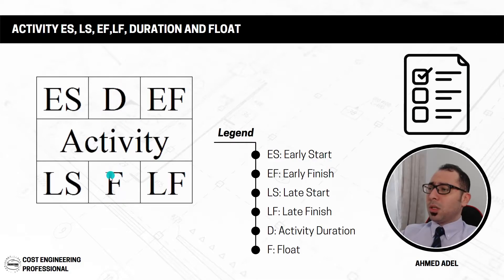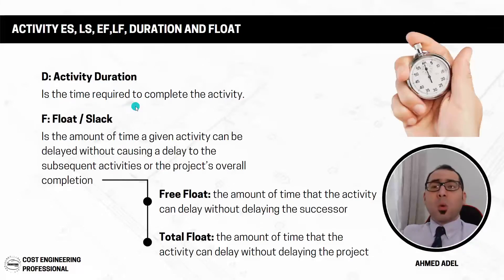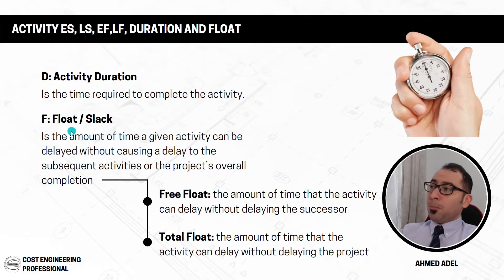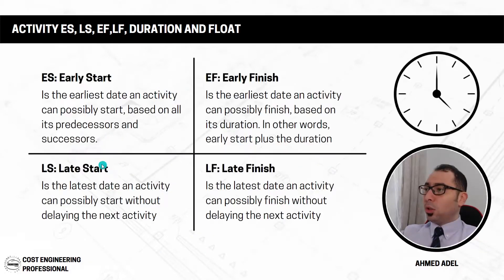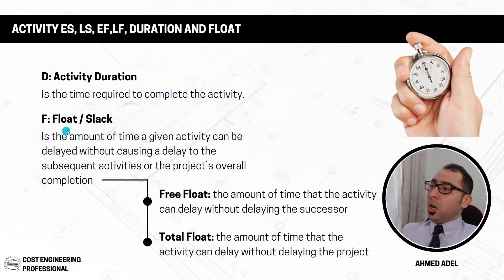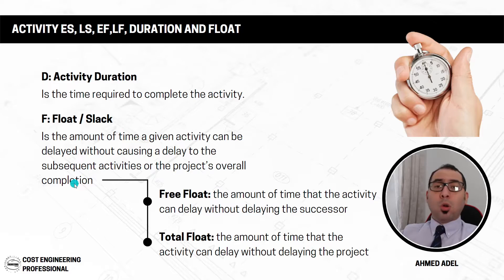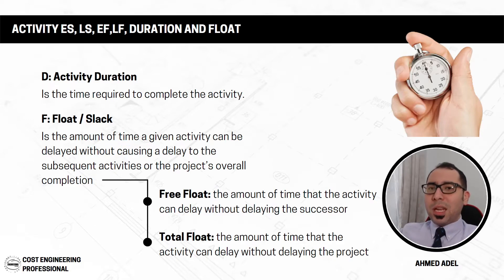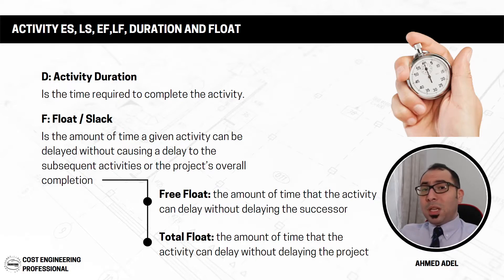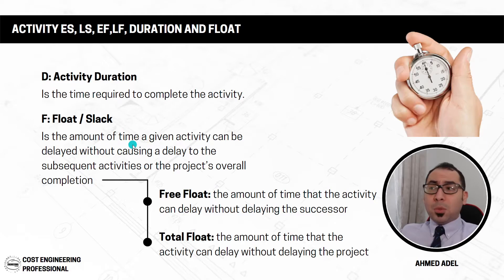Activity duration is straightforward — it's simply the time required to complete an activity. If I need five days to complete an activity, the duration is five days. Float, also called slack, is the amount of time a given activity can be delayed without causing a delay to subsequent activities or to the project's overall completion. It represents how much buffer time that activity has.